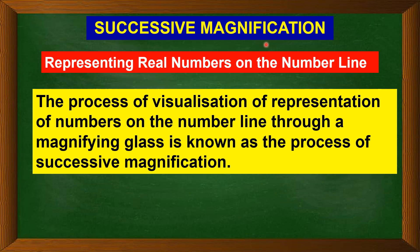Successive magnification helps us to represent real numbers on the number line. By definition, the process of visualization of representation of numbers on the number line through a magnifying glass is known as the process of successive magnification. We are not going to use a magnifying glass as such — we are just going to select a small zone on the number line and successively drill down on it to represent real numbers, especially decimal numbers, as a specific point on the number line.